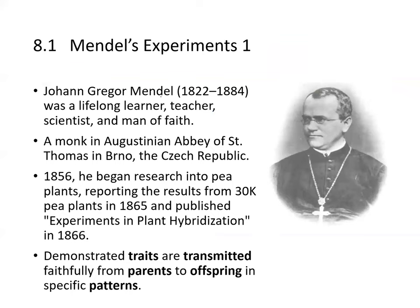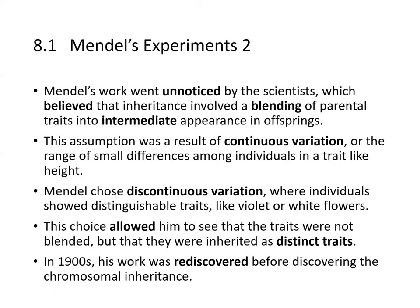He was a lifelong learner, teacher, scientist, and man of faith — he was a monk at an abbey in the Czech Republic. In 1856, he began researching pea plants and reported results from 30,000 pea plants in 1865, and published 'Experiments in Pea Hybridization' in 1866. He demonstrated that traits are transmitted from parents to offspring in specific patterns. His work went unnoticed until some scientists believed inheritance involved blending of parental traits into intermediate appearance of the offspring.